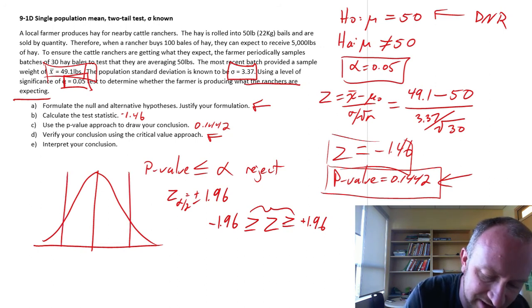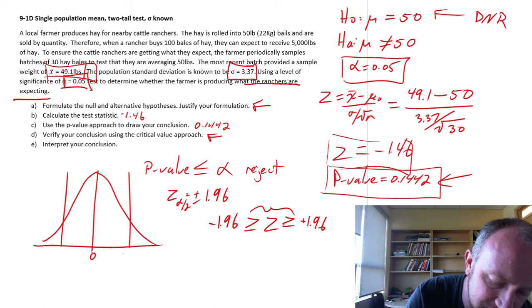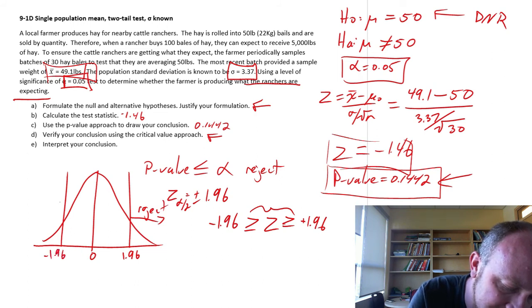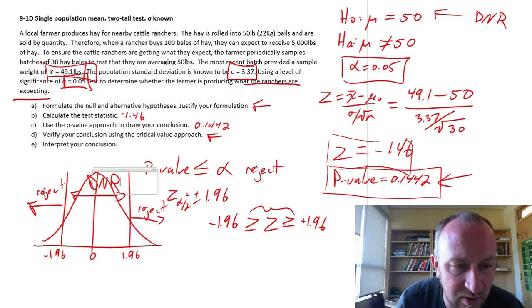Sometimes I find it's easier if we draw it. I know here's 0. Here's 1.96. I reject if it's up here. Here's negative 1.96. And we reject if it's down there.